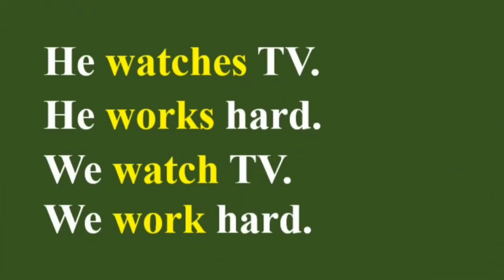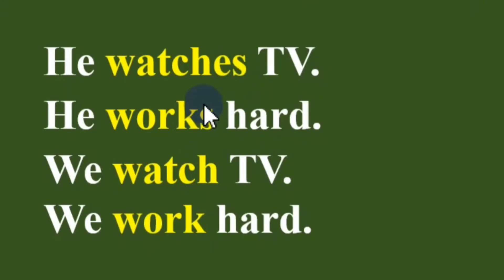How do you understand that this is present simple? When there is a main verb and with this main verb you have -s or -es at the end — or sometimes no -s and no -es, just the base form — this is 100% present simple. For example: 'he watches TV,' 'he works hard,' 'we watch TV,' 'we work hard.' If the subject is singular, add -s or -es with the main verb. If the subject is plural, you do not need to add -s or -es.